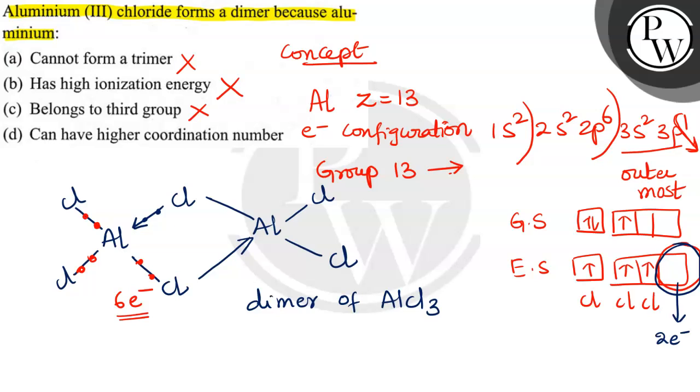Actually, normal coordination number is 3, but it is extending its coordination because of this vacant p orbital. P orbital khali rahene se, it can gain an extra pair of electrons from chlorine.